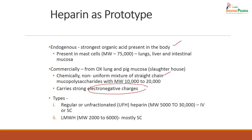Types of heparin: regular unfractionated heparin has molecular weight 5,000 to 30,000 and is given intravenously or subcutaneously. Low molecular weight heparin, used most of the time, has molecular weight 2,000 to 6,000 and is given subcutaneously.